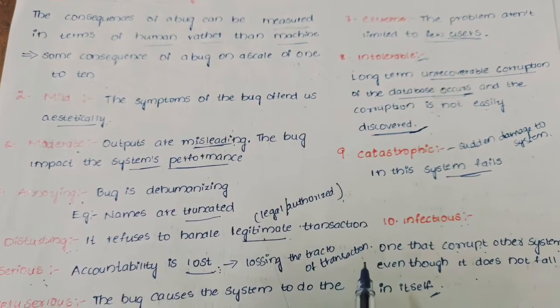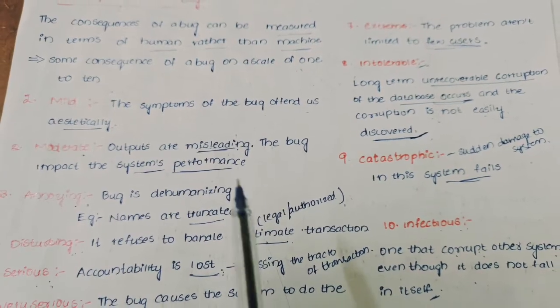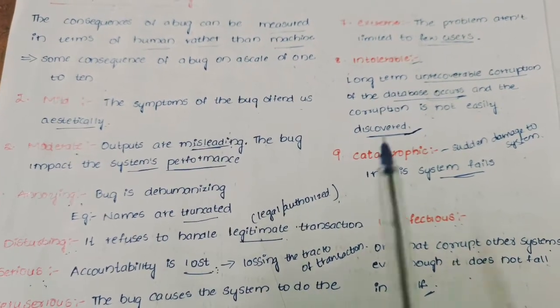Total 10 bugs which are measured on the 1 to 10 scale, and these are the most 10 consequences of the bugs.